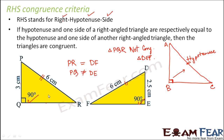Basically, the simple thing to remember is that for two right angled triangles to be congruent, their hypotenuse should be equal and one of their sides should be equal.